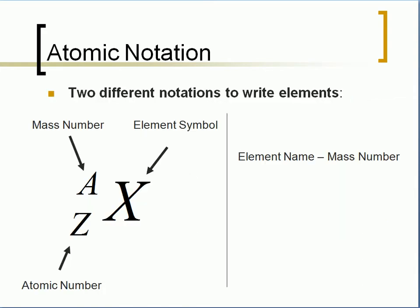There is a notation that we do to write elements. Here's the basic notation: we'll have some element symbol X. The mass number A will be written as a superscript, and the atomic number Z will be written as a subscript. Another way of writing it is the element name-mass number. Both notations work, because no matter what, if you change the number of protons, you change the element.